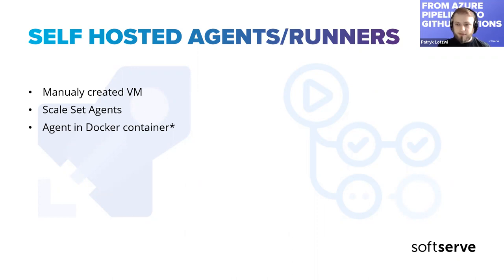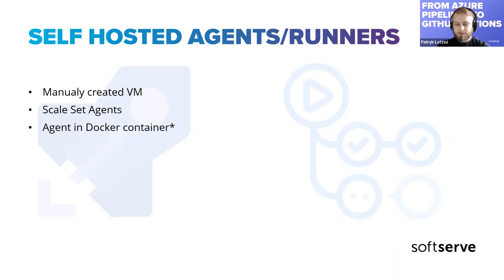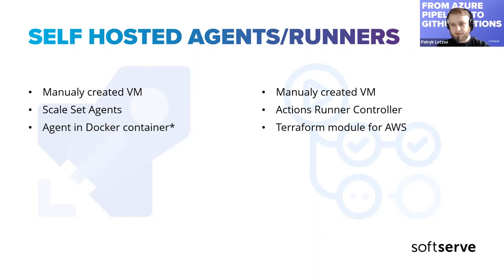You could also run agents in Docker containers, but I've put an asterisk here. At the beginning Microsoft created some Docker images with the agents, but they deprecated that project — it's now archived. Now they only provide a tutorial on how to create your own image using scripts they provide, so you can create a Docker image with the agent and use it as a runner. But that option lacks all the cool auto-scaling features that the scale set provides.